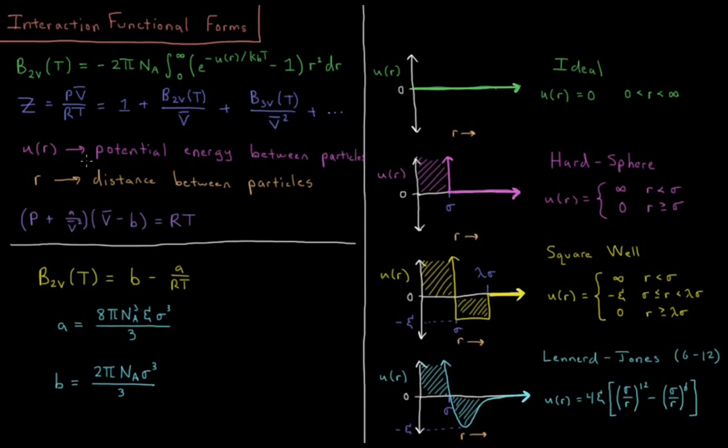This u(r) is the potential energy between particles. The potential energy is positive at short distances because particles take up space and repel each other. At intermediate distances, they attract one another through van der Waals interactions, and at long distances they don't interact, where r is the distance between particles.